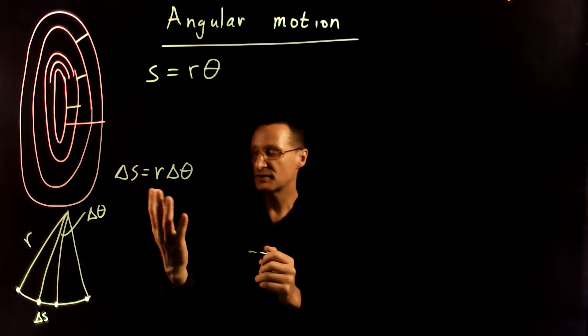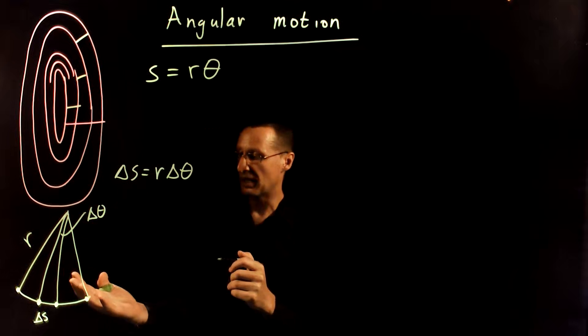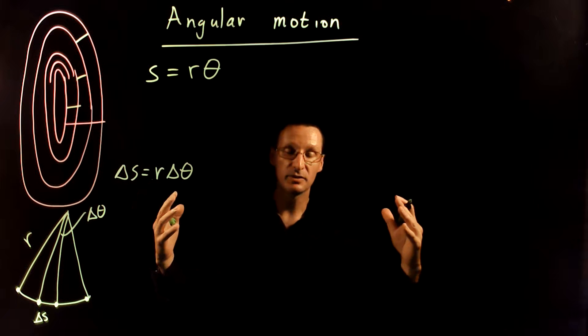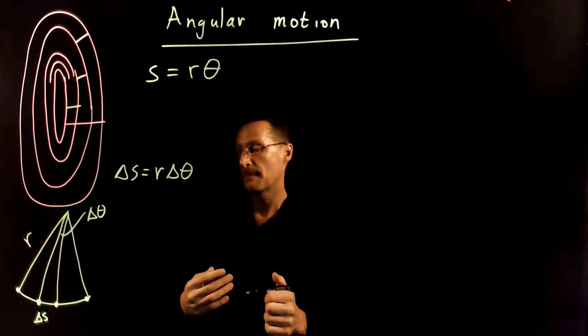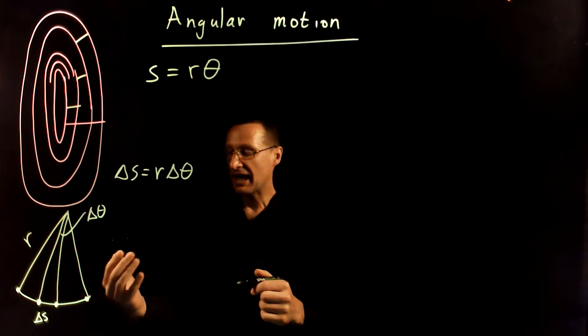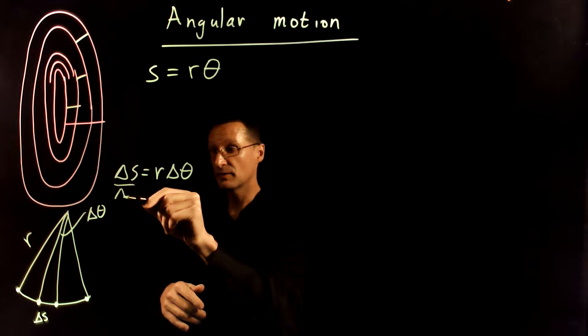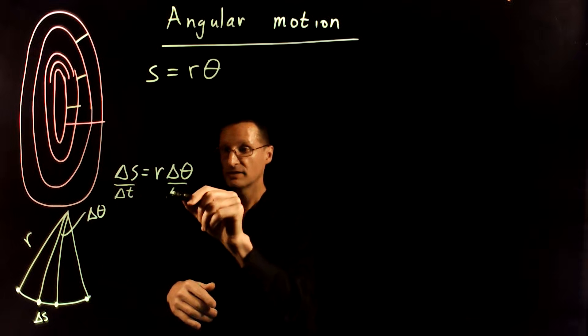Now, the reason for doing it this way is we want to think about how do these things change with time, because we want to think about some sort of angular velocity here. If I want to think about how these change with time, I can just divide these by the time interval over which they occur. So let me do that.